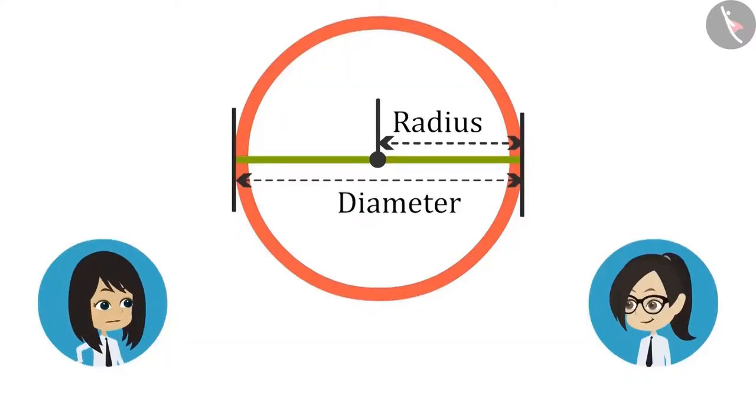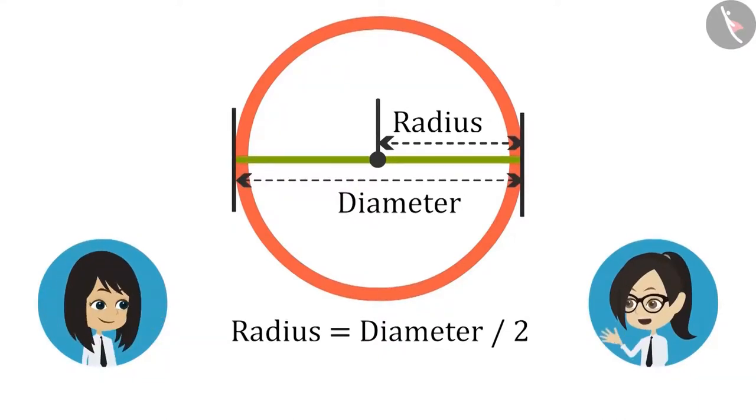Remember, sir told that the radius is diameter divided by 2. It means diameter is equal to 2 times the radius.